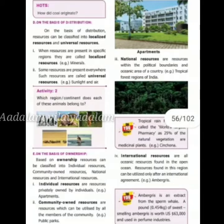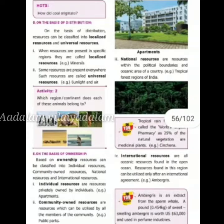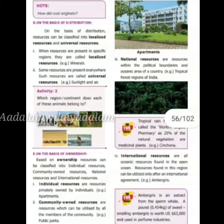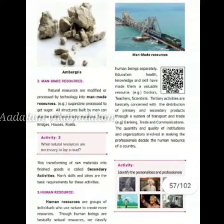On the basis of ownership, resources can be classified into individual resources, community-owned resources, national resources, and international resources. Individual resources are privately owned by individuals — for example, apartments. Community-owned resources can be utilized by all members of a community — for example, public parks. National resources are resources within the political boundaries and oceanic area of a country — for example, the tropical forest regions of India.